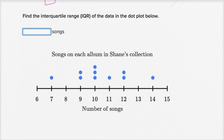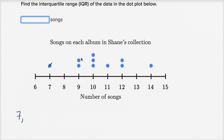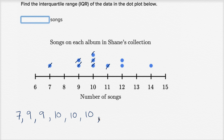Let's do some more of these — this is strangely fun. Find the interquartile range of the data in the dot plot below: songs on each album in Shane's collection. This is just representing the data in a different way, but we can write this as an ordered list. We have one album with seven songs, two albums with nine songs, three tens, one eleven, two twelves, and one album with fourteen songs. That's our ordered list.